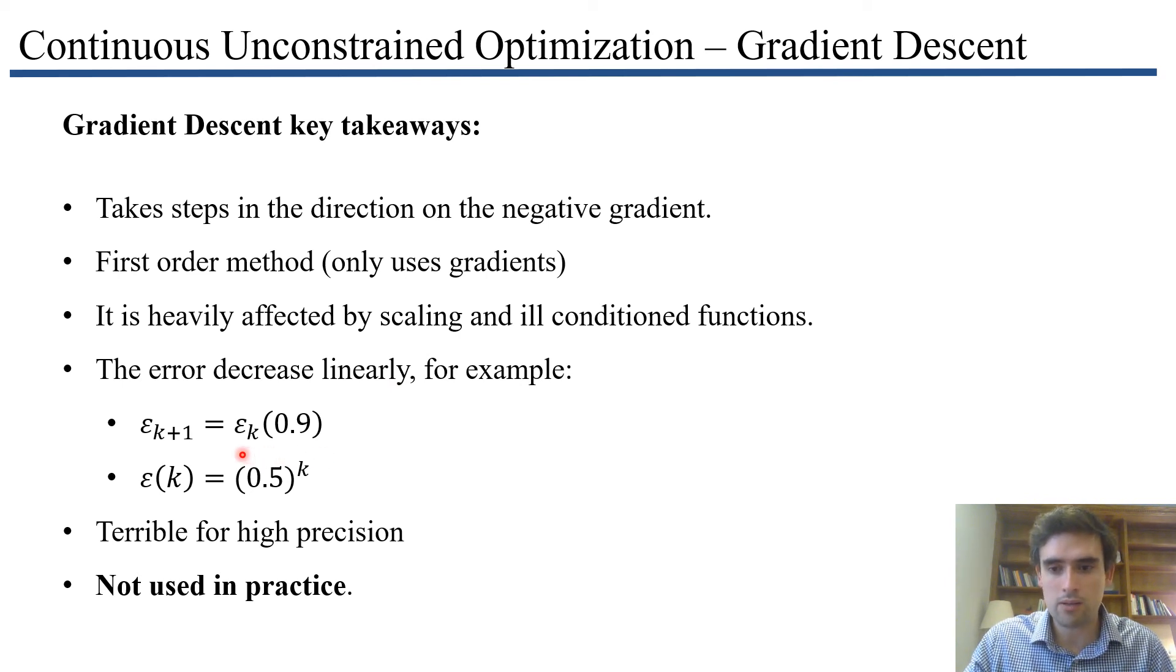The error with respect to my point and the optimum point decreases linearly. If my error at the current iteration is εk, then my error at the next iteration is εk times 0.9. If my error is large, at the beginning I'm going to make fast progress. But once εk is quite small, maybe 10^-3, you're going to be making very small progress because at every step you're only making some fraction of the progress of your current error. This is called linear convergence, and it's terrible for high precision.